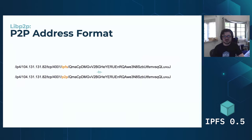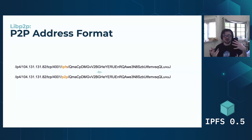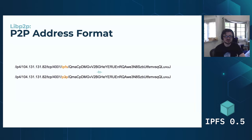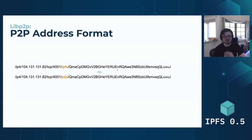We've also switched the address format. Before, you would see addresses starting with IPv4 or whatever slash IPFS — this came from when libp2p was actually bundled into IPFS. Now that it's been extracted, we use the /p2p address format. The main reason is that the old format with slash IPFS could look like a file path, causing people to think it's a file when it's actually a network node address. So we want to disambiguate that.